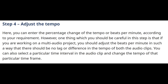Step 4: Adjust the tempo. Here you can enter the percentage change of the tempo, or beats per minute, according to your requirement. However, one thing to be careful about in this step is that if you are working on a multi-audio project, you should adjust the beats per minute so that there is no lag or difference in the tempo of both audio clips. You can also select a particular time interval in the audio clip and change the tempo of that specific timeframe.